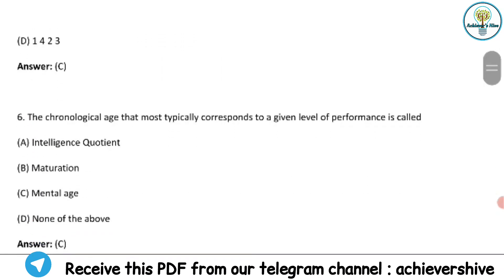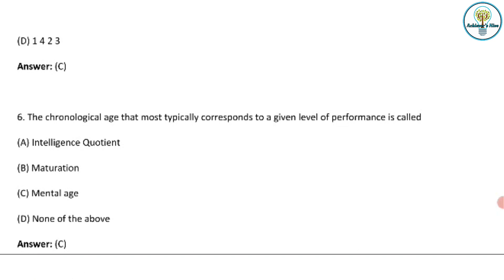Moving on, the chronological age that most typically corresponds to a given level of performance is called which one? It is called mental age. So you should remember that the chronological age that typically corresponds to a given level of performance, that is known as mental age.